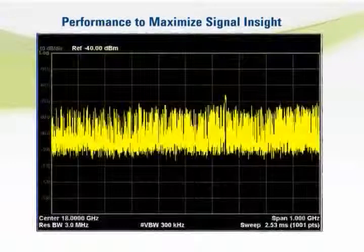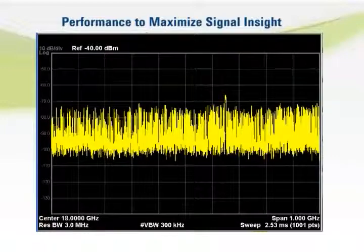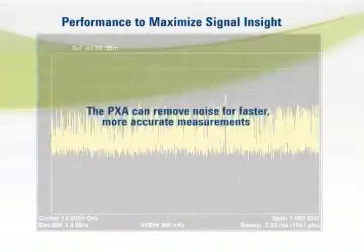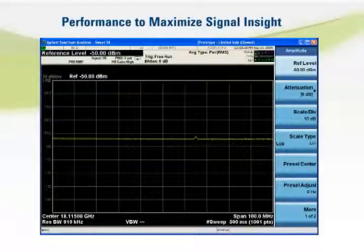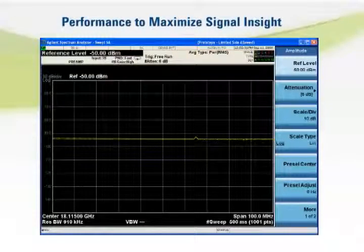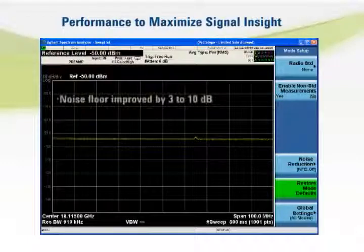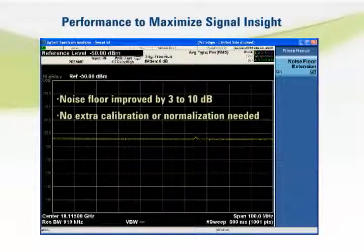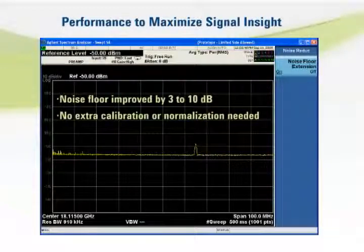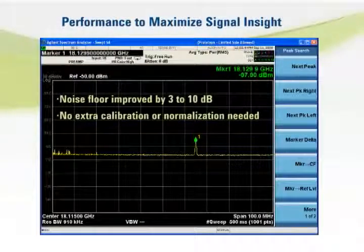Noise can make measurements such as spur searches slow and limit sensitivity and accuracy. In the PXA, a new technique removes significant noise from spectrum measurements. The analyzer's already low noise floor is so precisely characterized that it can be accurately and automatically subtracted from spectrum and power measurements. This new noise floor extension technique improves the measurement noise floor by 3 to 10 dB, improving accuracy and speed for small signals.